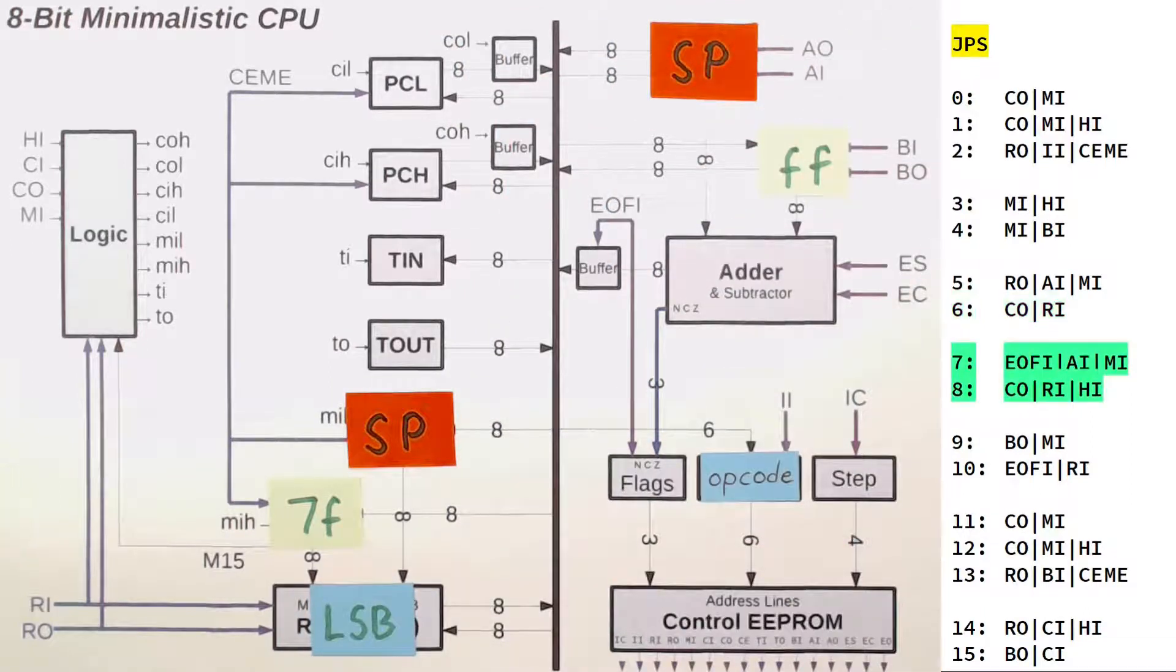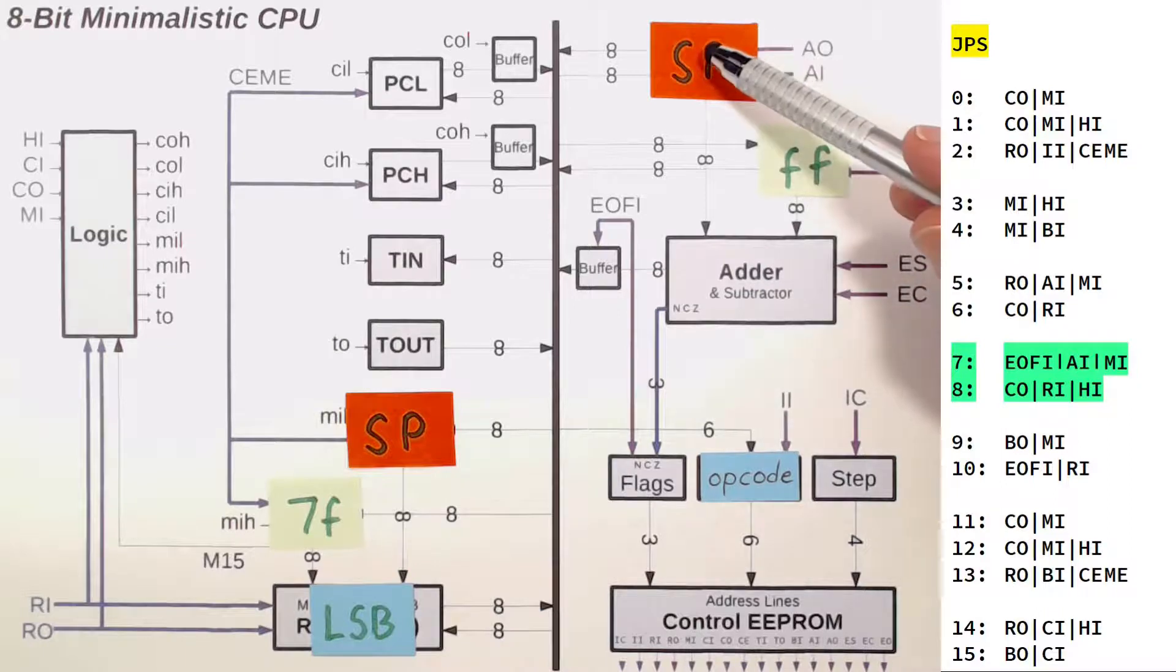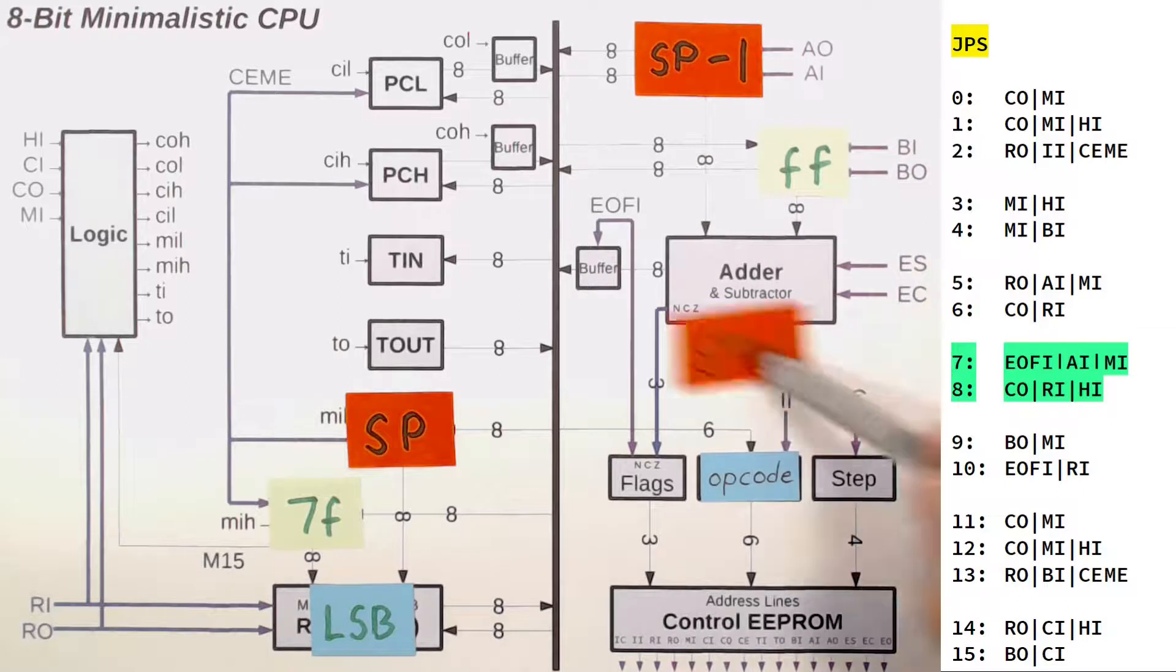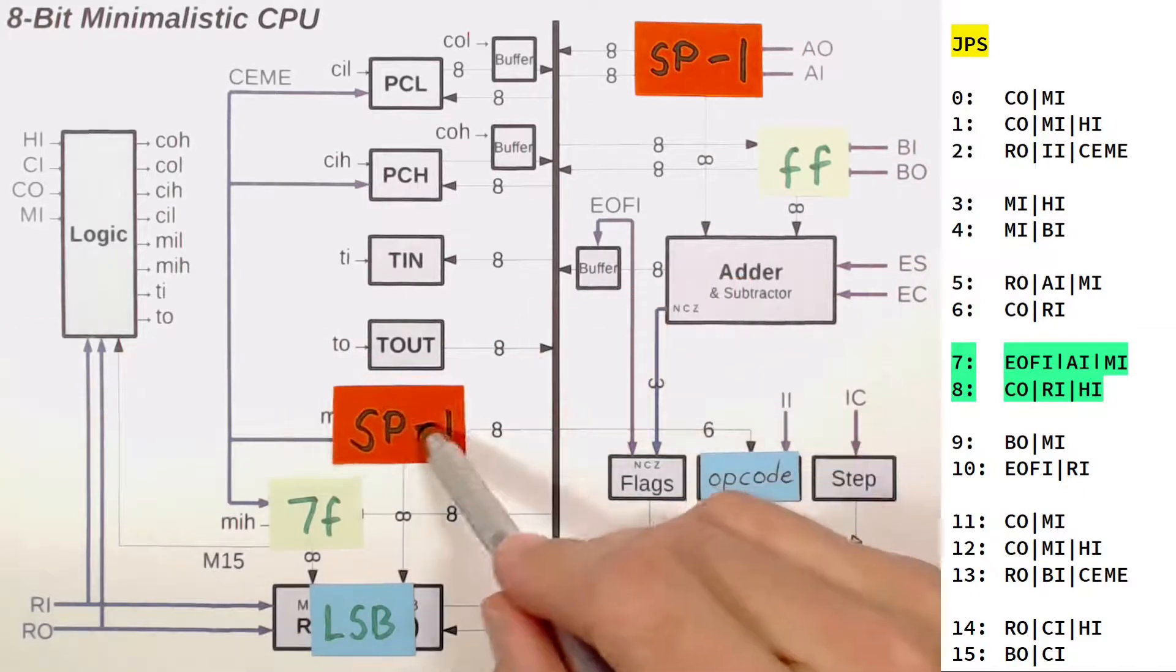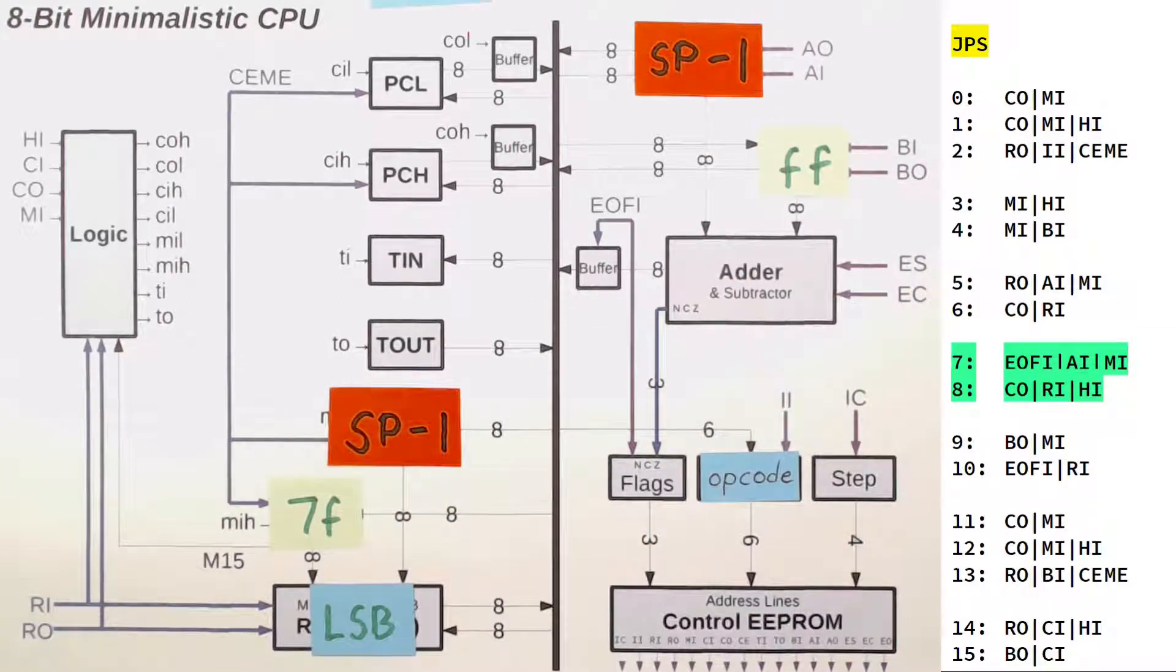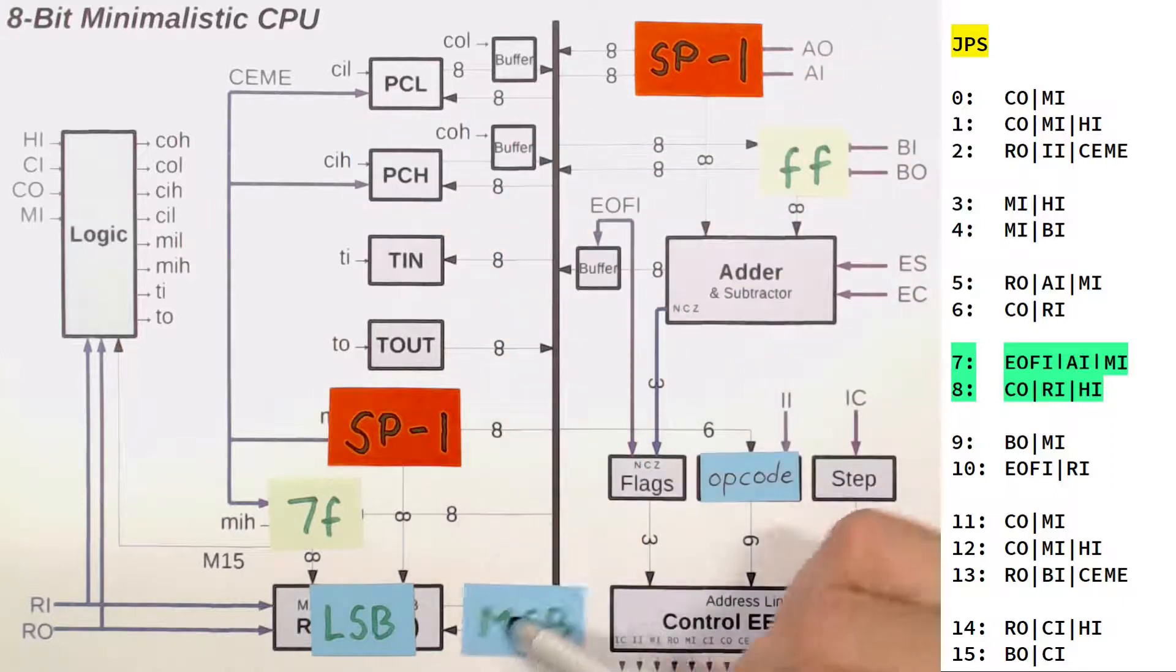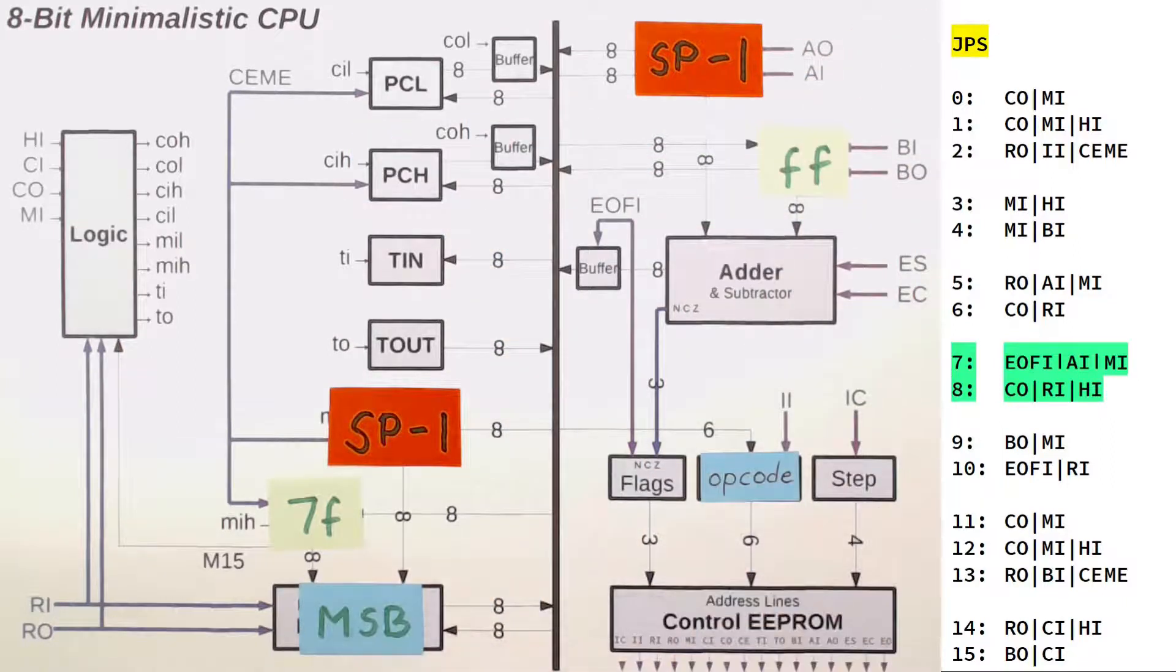Now line number 7 adds minus 1 to our stack pointer here in A and puts that result back into our A register and also into our memory address register. And we use COUNTER OUT HIGH RAMIN to move the MSB of our program counter also into our stack memory. Note that we've successfully written our return address to the stack now.